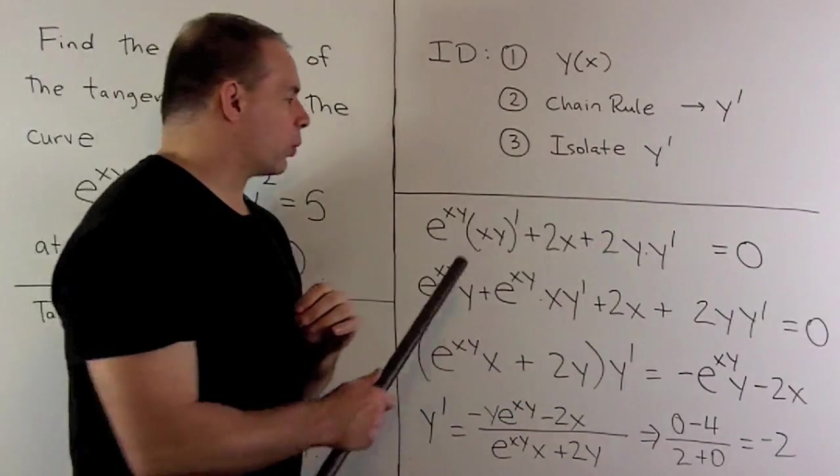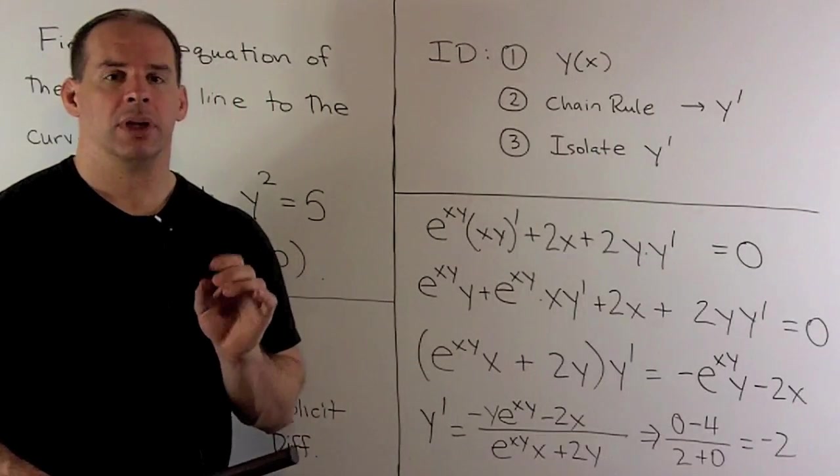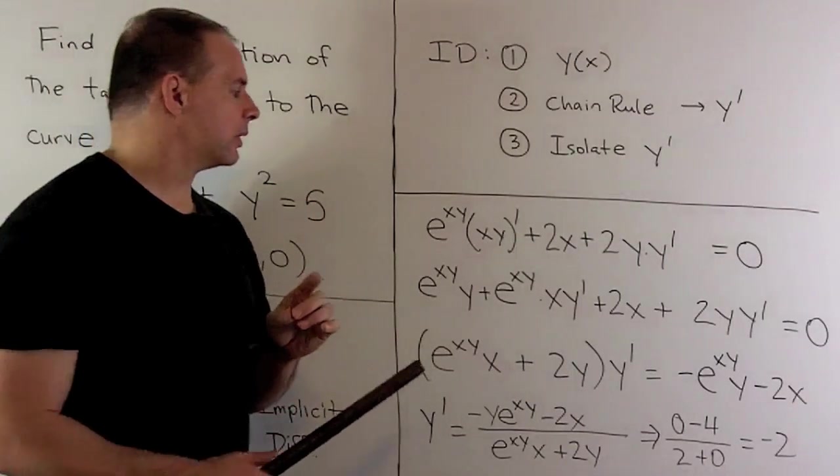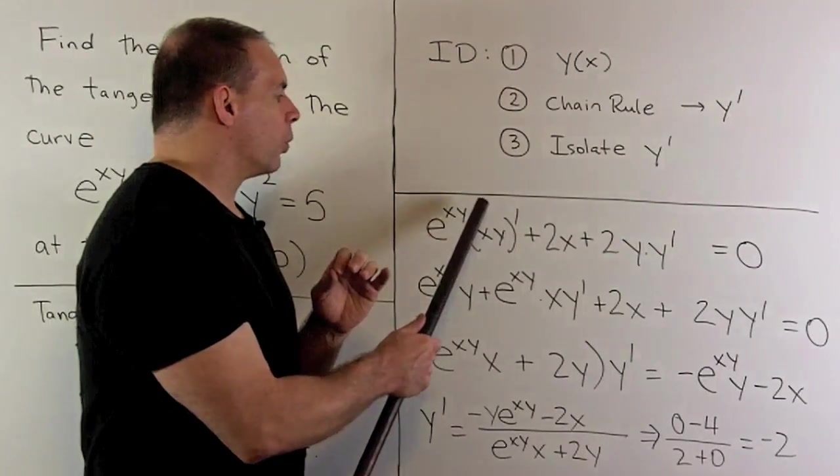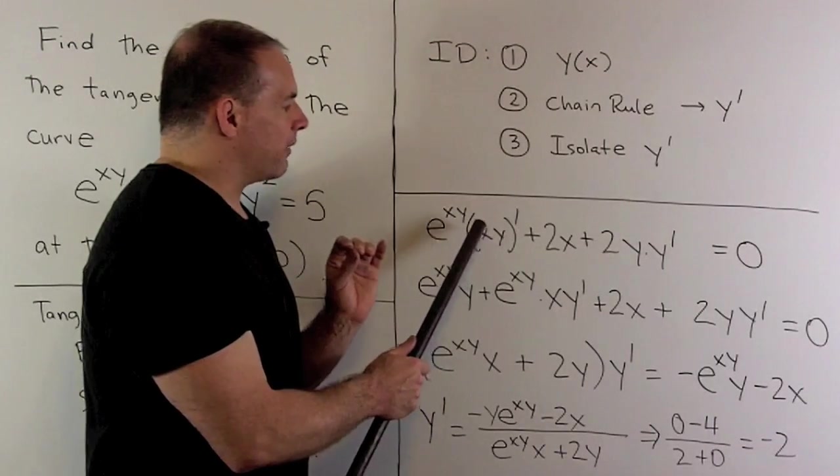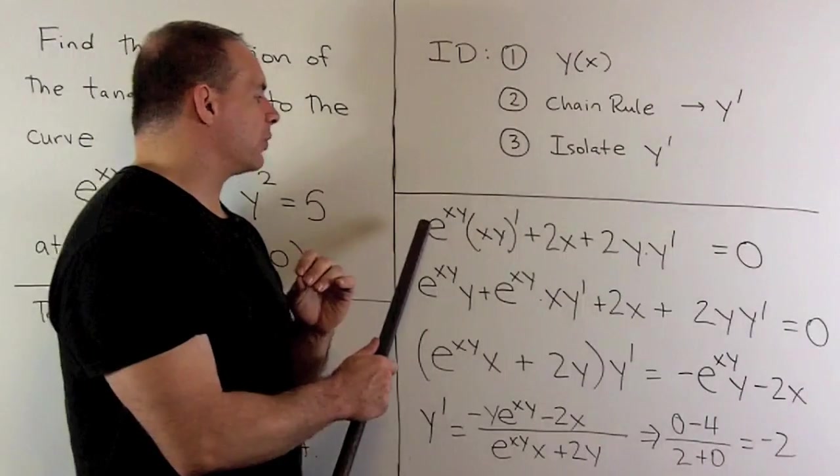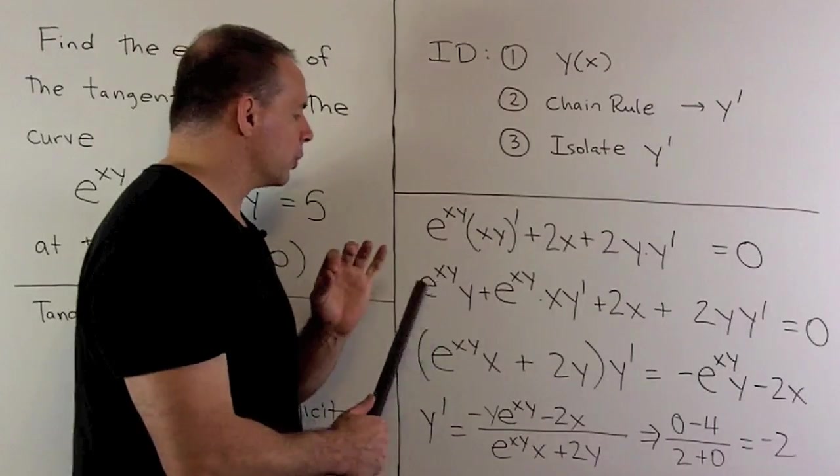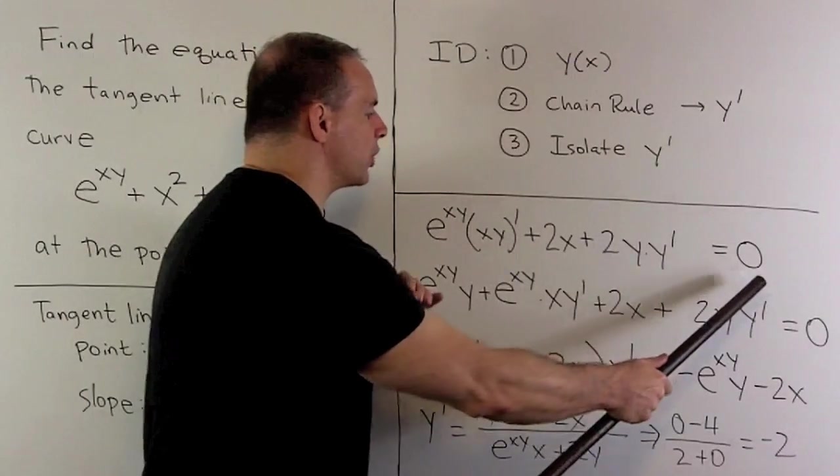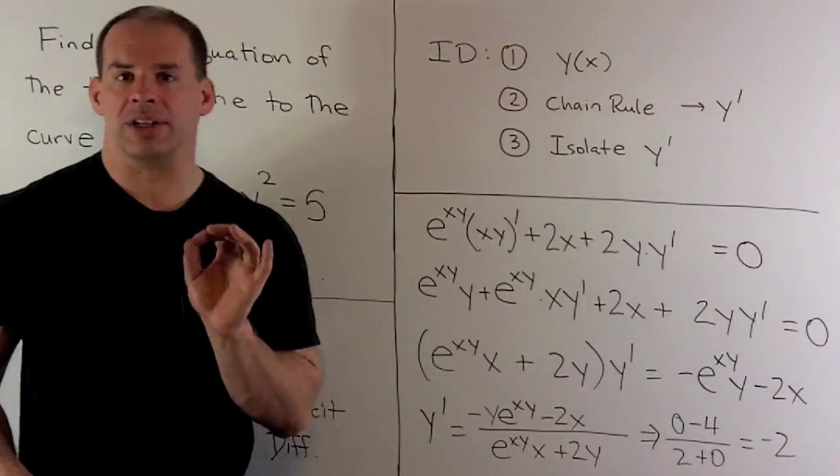We have to work out (xy)'. It's just a product rule. Derivative of the first times the second plus the first times the derivative of the second. So that'll give me y plus x times y'. We multiply through by e^(xy). So we'll get these two terms here. We bring down the rest of the terms. And now, this equation is the one where I want to isolate y'.